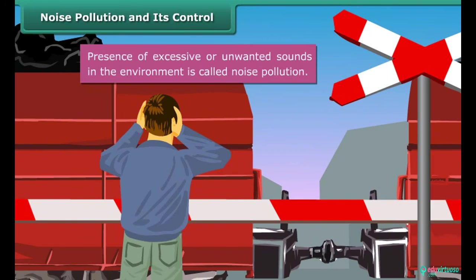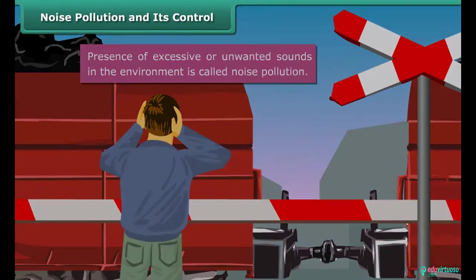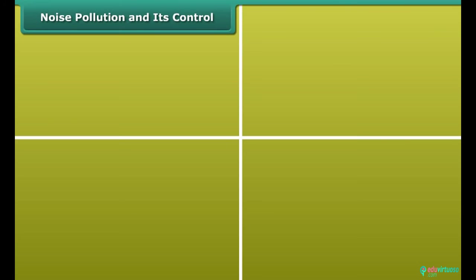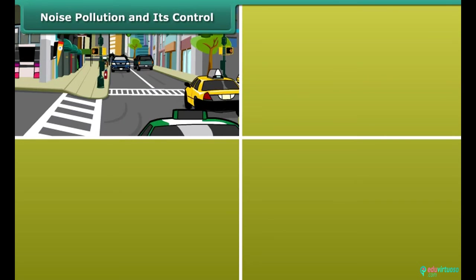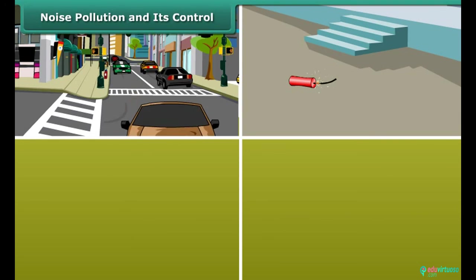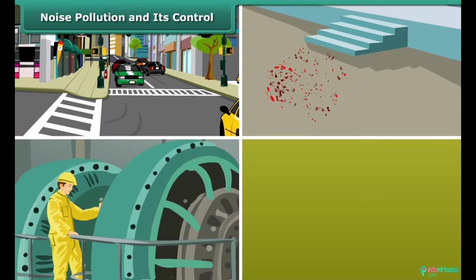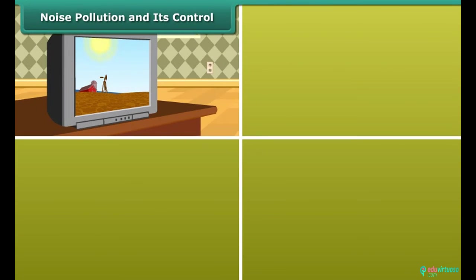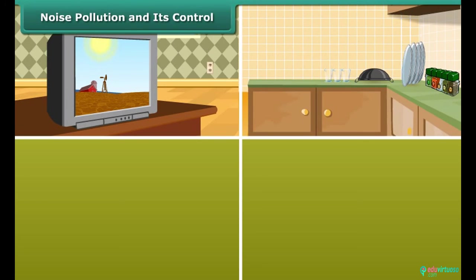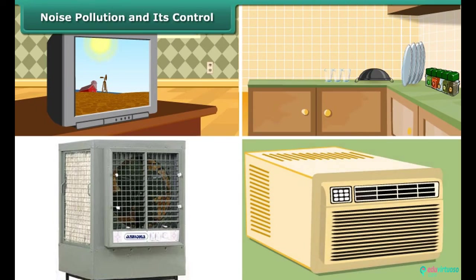Noise pollution and its control. Presence of excessive or unwanted sounds in the environment is called noise pollution. The major cause for noise pollution is sounds of vehicles, explosions including bursting of crackers, machines, loudspeakers, etc. Television and transistor radio at high volumes, some kitchen appliances, desert coolers, air conditioners, all contribute to noise pollution.